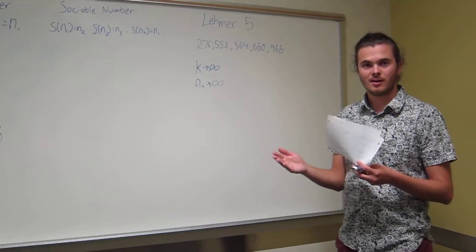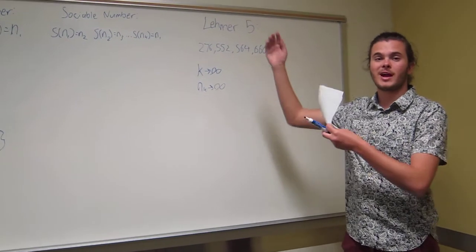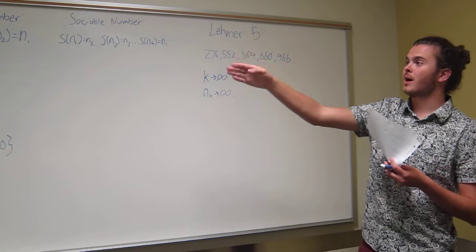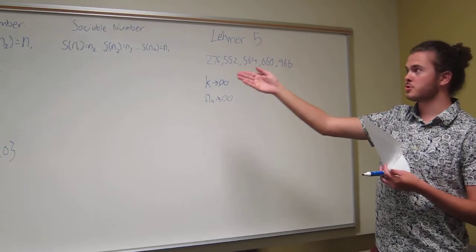So they don't really know if it goes on to infinity or if it just goes to some really high number before converging to either a prime, perfect, amicable, or sociable number.